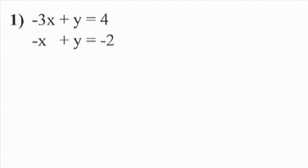Looking at number one, we have negative 3x plus y equals 4 and negative x plus y equals negative 2. Notice how all the variables are lined up — x's together, y's together, and constants together. We identify that the y's have the same coefficient, both just 1y, so we're going to eliminate the y's. Since they're both plus y, we will need to subtract one equation from the other.